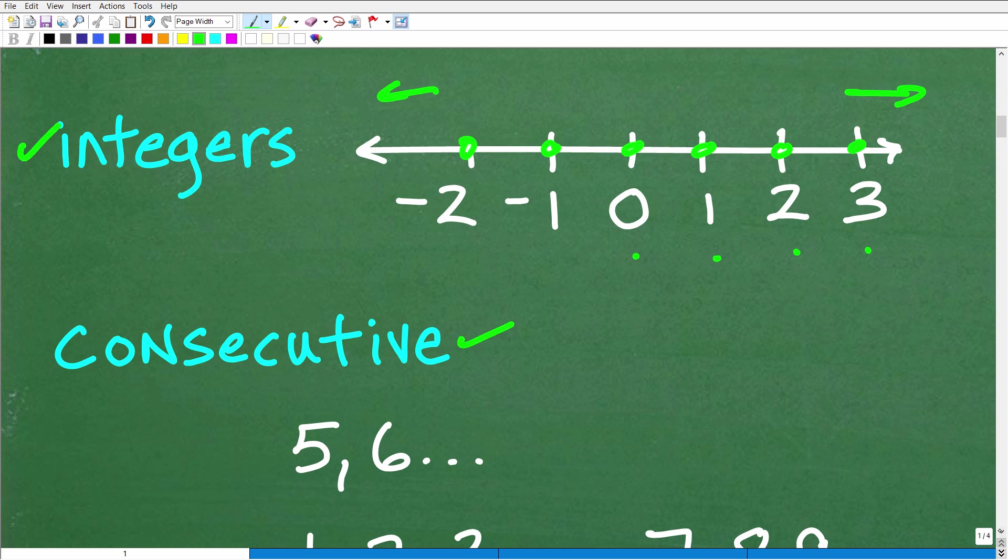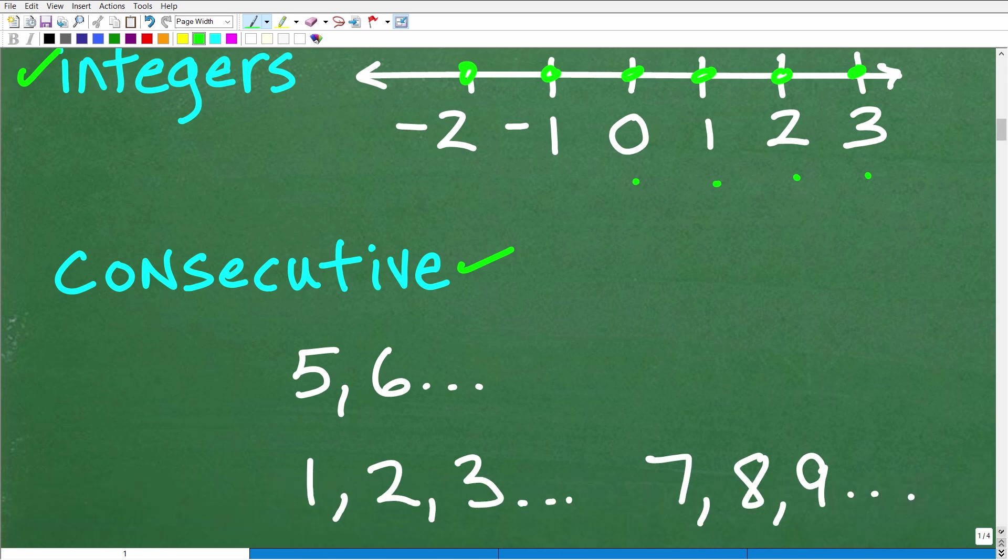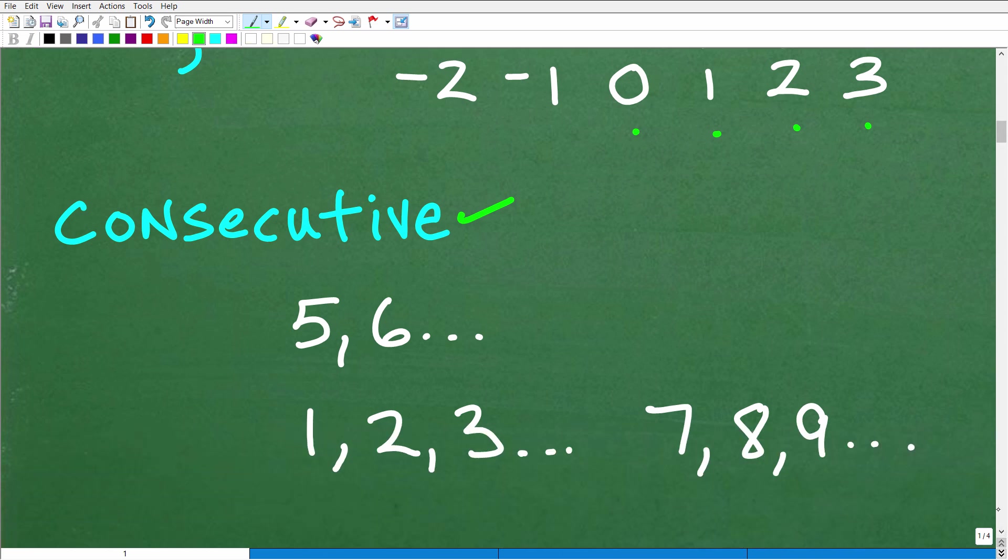And consecutive, well, the word consecutive in mathematics or anything is just, you basically have one thing right after a number that comes right after a previous number. So you have a number and then the next number. I guess that's the best way to say it. I'm not going to give you a formal definition. Sometimes it's just easier to see it. So five and six are consecutive numbers.